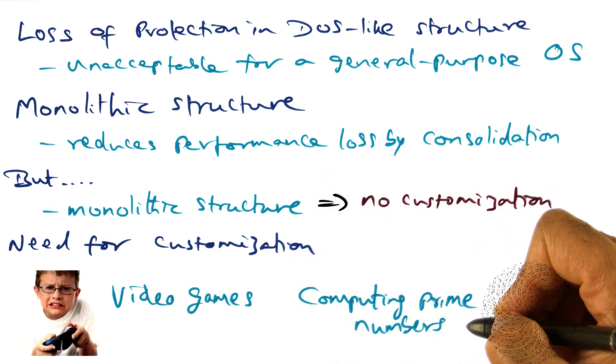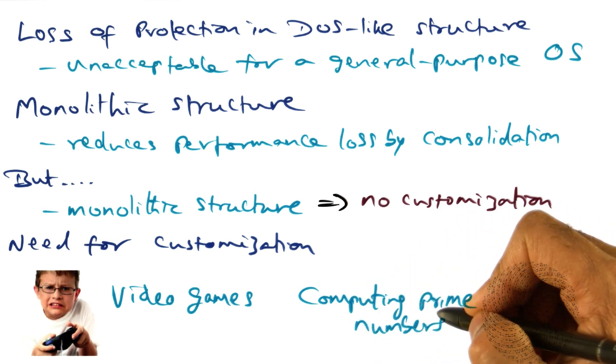On the other hand, for the programmer that wrote this prime number computing application, the key determinant of performance is going to be sustained CPU time that's available for crunching his application.